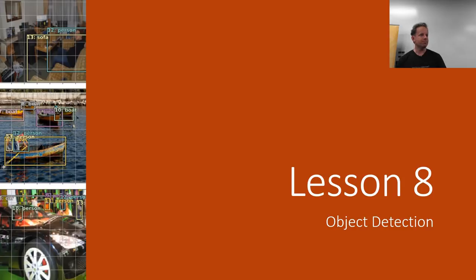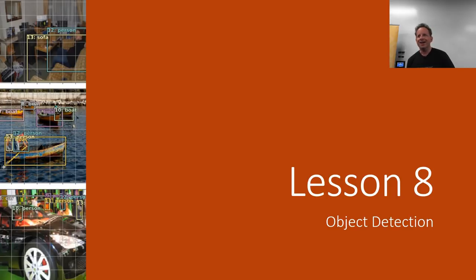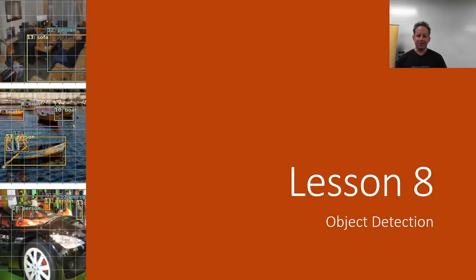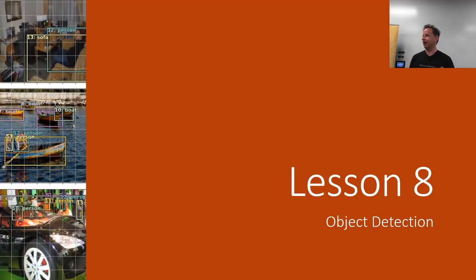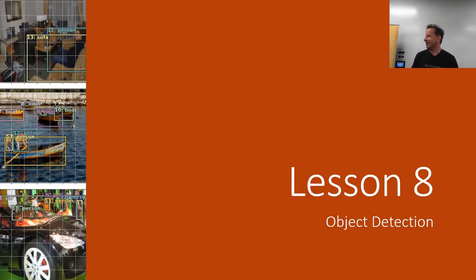Welcome to Part 2 of deep learning for coders. Part 1 was practical deep learning for coders. Part 2 is a little different, as we'll discuss. I started not beginning Part 2 with Lesson 1 but with Lesson 8, because it's part of the same sequence. So Part 2 Lesson 1 and Part 2 Lesson 8 are the same thing, if I ever make that mistake.